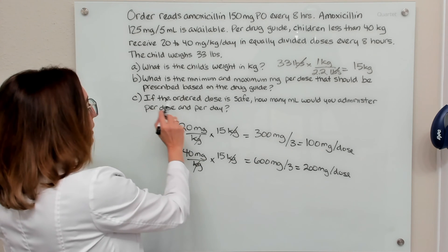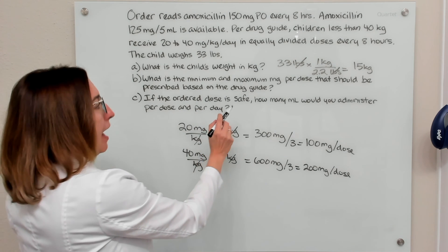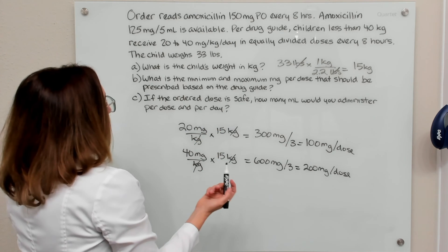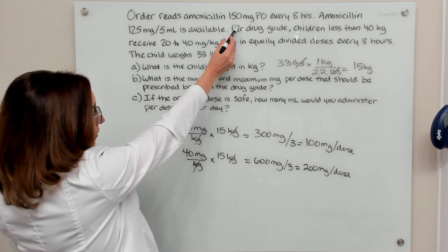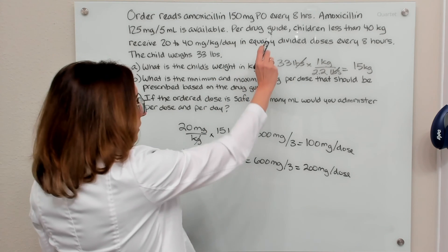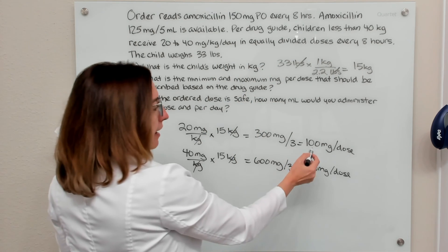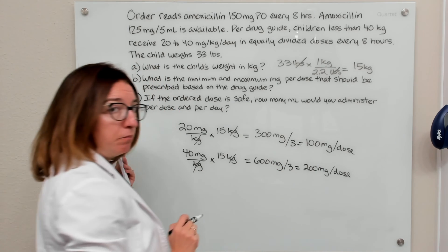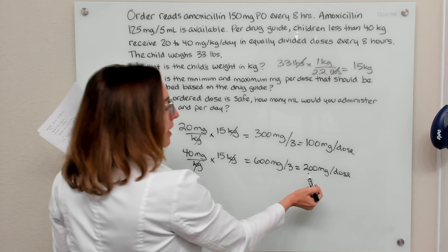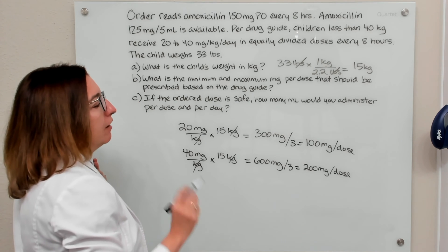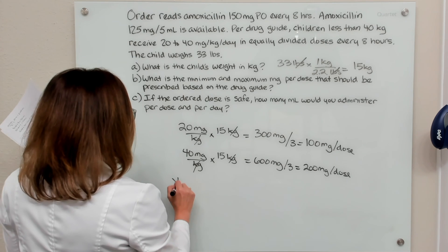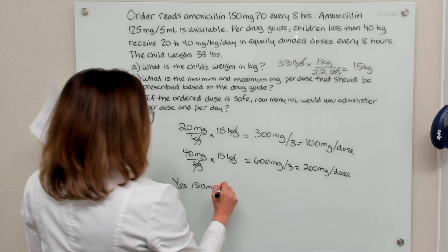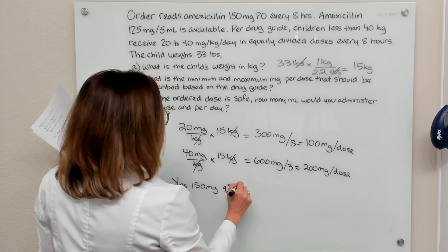Part C asks us if the ordered dose is safe, how many milliliters would you administer per dose and per day? Our ordered dose is 150 milligrams every eight hours. You can see that falls within the safe dose range — it's over the minimum of 100 milligrams per dose and under the maximum of 200 milligrams per dose. So yes, 150 milligrams every eight hours is safe.